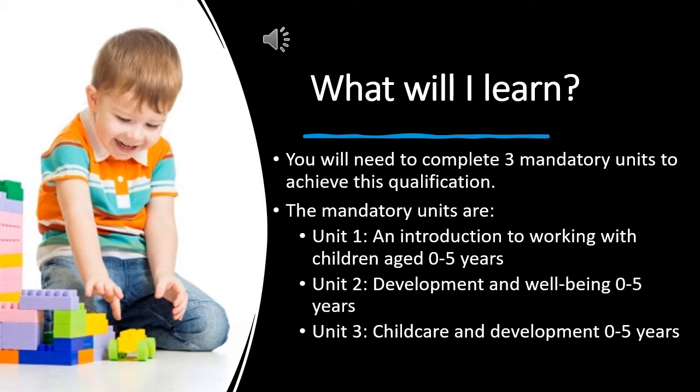Unit 2 is the development and wellbeing of years 0 to 5. Unit 3 is all about childcare and the development of years 0 to 5. It's really important that you want to learn about how children form from conception all the way through to age 5 and how fast they develop during that time.